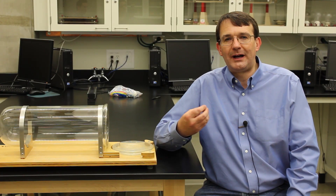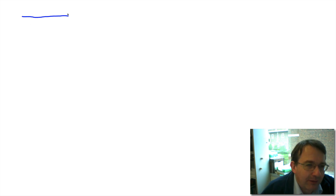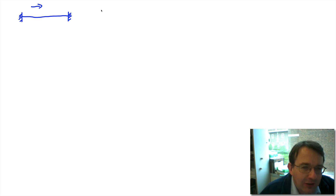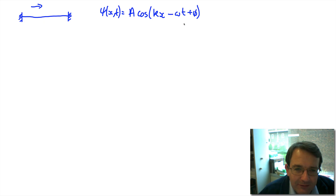Let's start by looking at the mathematical description of the waves and coming up with a mathematical prediction for what we expect to see. We have a string with two clamped ends, and we're starting with a wave travelling in the positive x direction. So our initial displacement, ψ(x, t), is just our standard wave: cosine of kx minus ωt plus some phase constant φ.